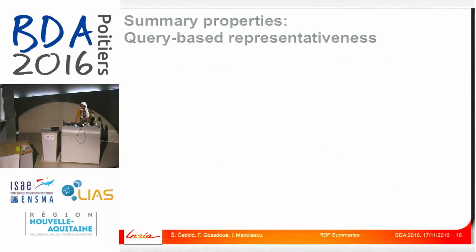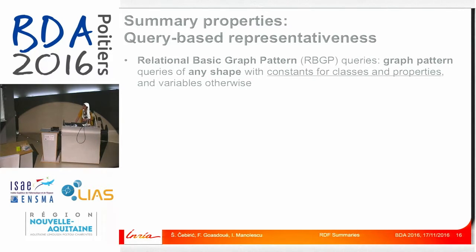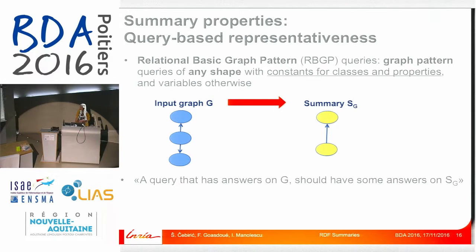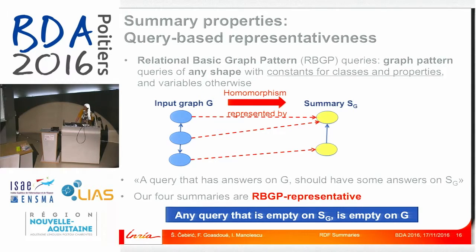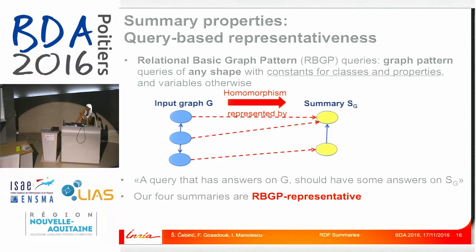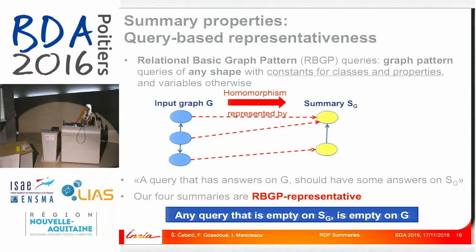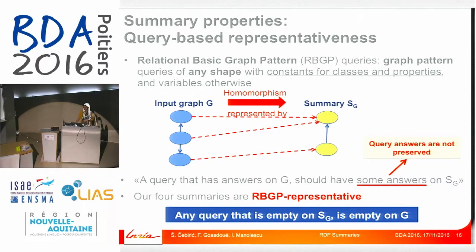We look at query-based representativeness. As our query language, we take relational basic graph pattern (RBGP) queries, which are graph pattern queries of any shape with constants for classes and properties and variables in other cases. Given an RDF graph G, we want to represent RBGP queries from the input into the summary. This means that if a query has answers on G, it should have some answers on the summary. We achieve this by having a homomorphism from the input to the summary, so all of our summaries are RBGP representative. A consequence is that if a query is empty on the summary, it will for sure be empty on the input and we never have to run it. Note that exact query answers are not preserved — this is a trade-off to achieve full representativeness, compact summaries, and efficiency.